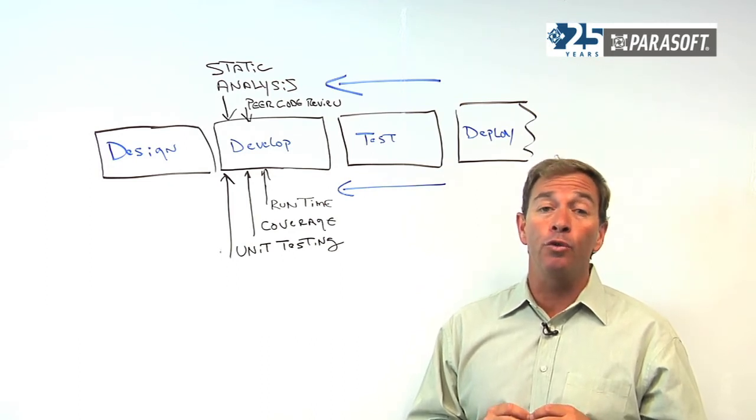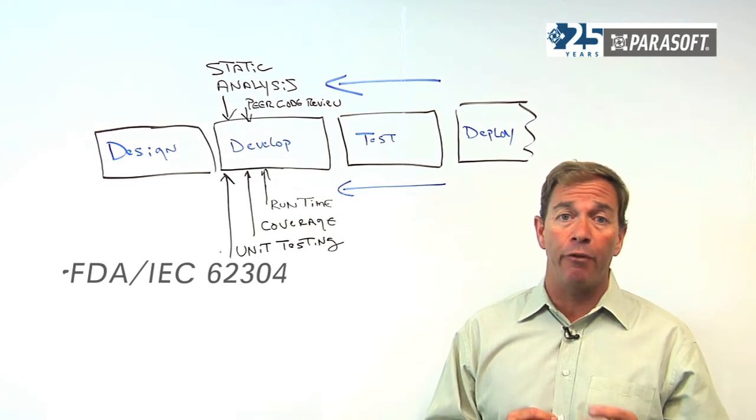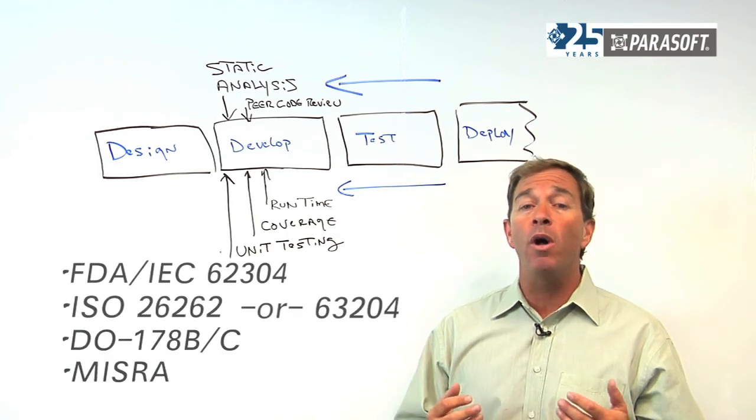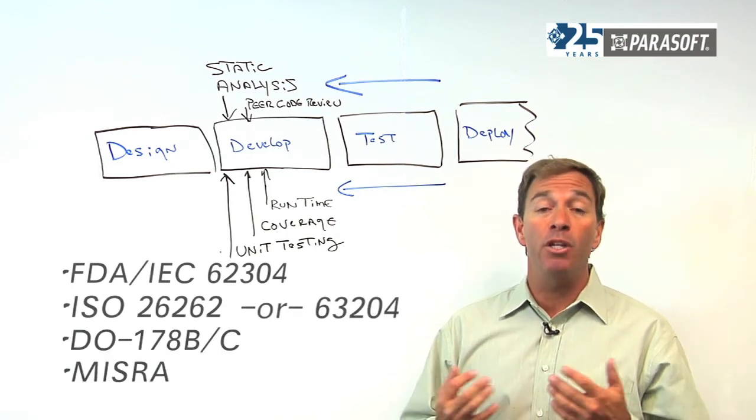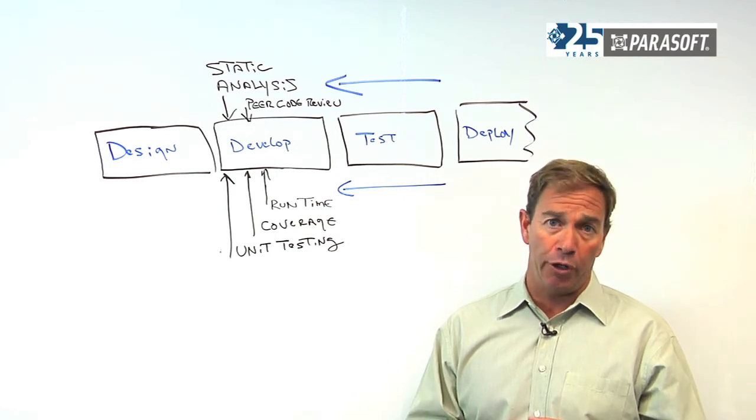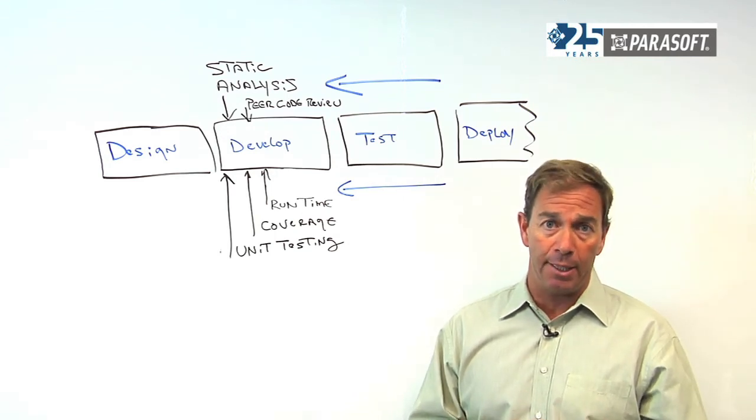This includes, for example, FDA guidelines for software verification and validation, ISO 26262 or 62304, DO 178C, MISRA for the automotive industry, and the array of software security practices that are out there on the marketplace today.